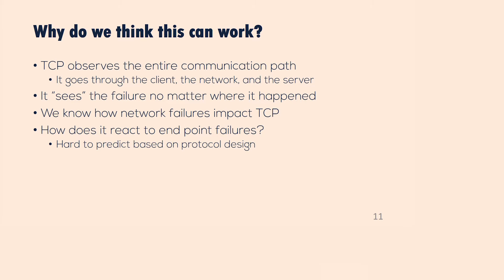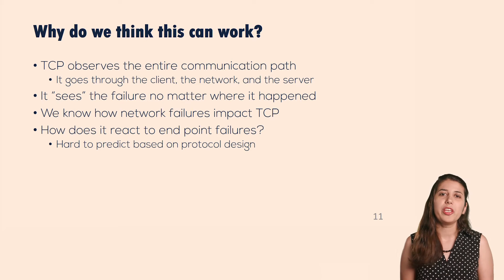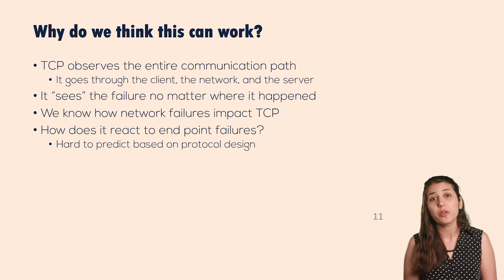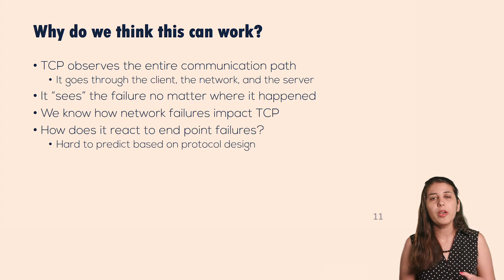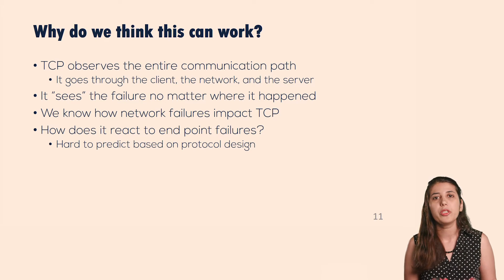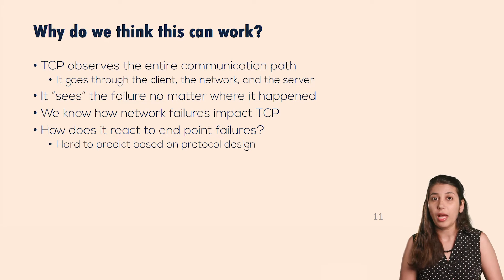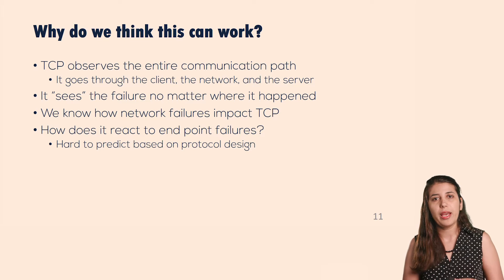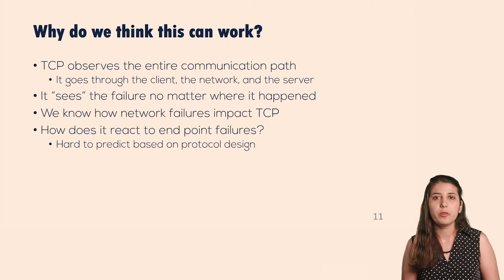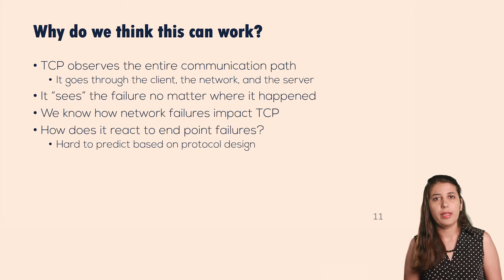Why do we think this can work? TCP sees the entire communication path — it goes through the network, the client, and the service. So if any one of these fails, TCP should theoretically see it. We already know how TCP reacts to network failures: if we have packet drops, we see an increase in duplicate ACKs; if we have large queues, we see an increase in smooth RTT estimates. But what do we expect when we have failures at the two endpoints? We can't reason about that based on basic principles of protocol design, but can we learn it?